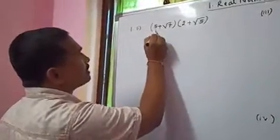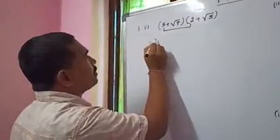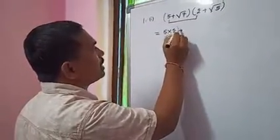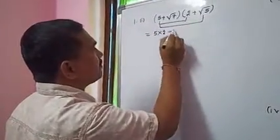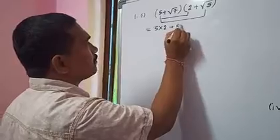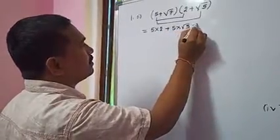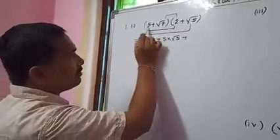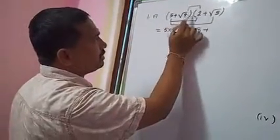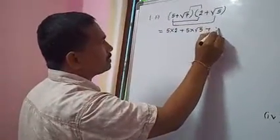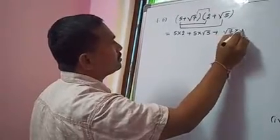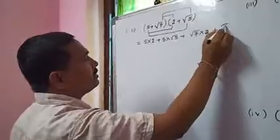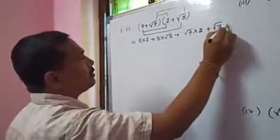First, multiply the first term with the first term: 5 into 2. Next, first term with second term: 5 into root 5, plus. Next, second term with first: root 7 into 2. Next, root 7 into root 5.